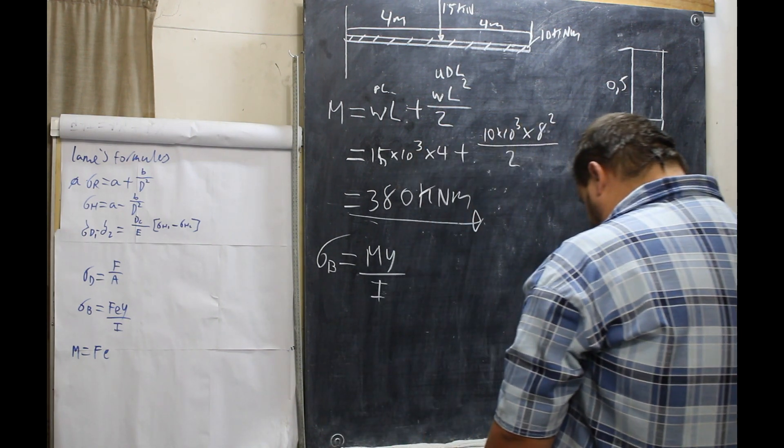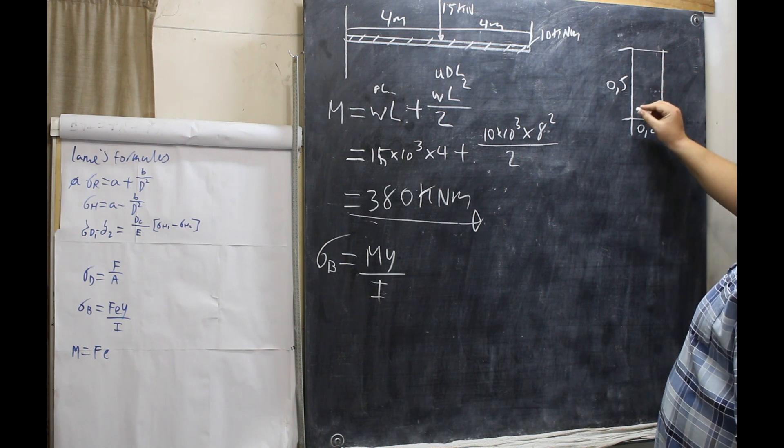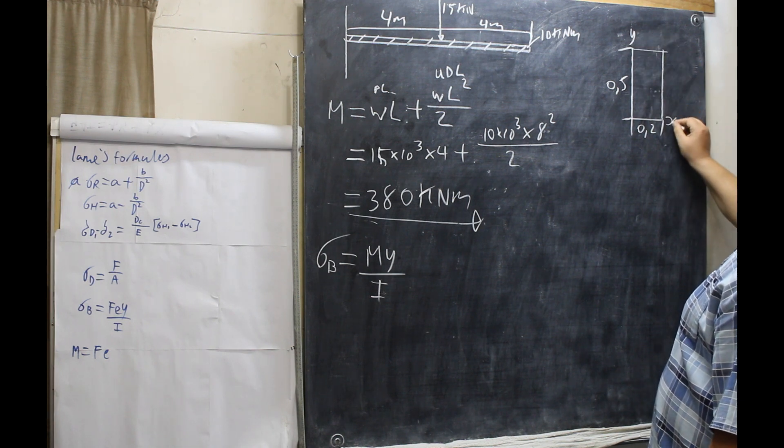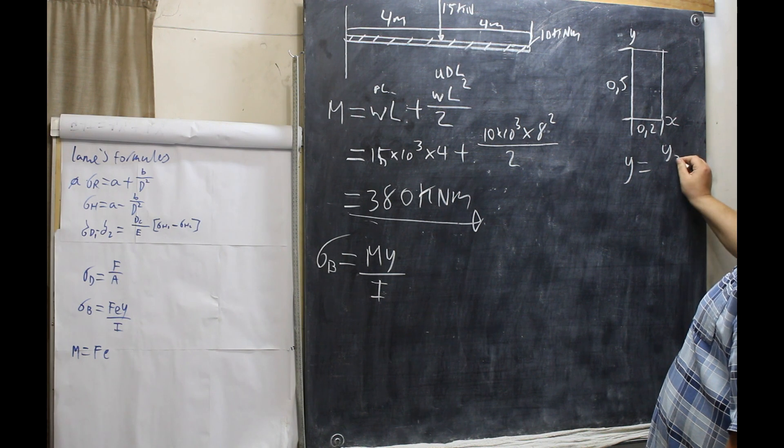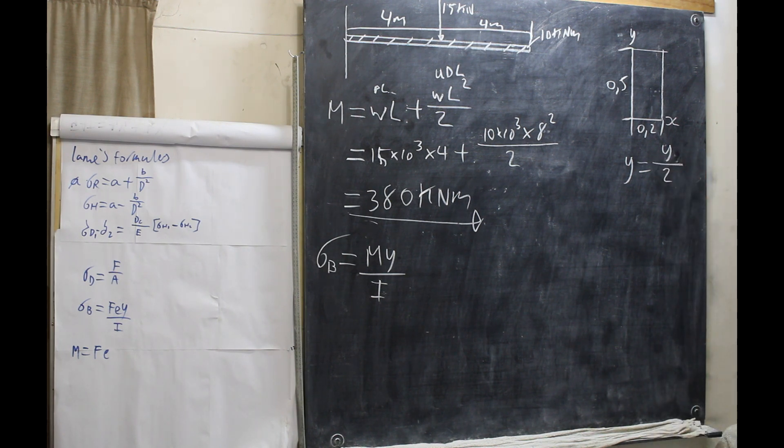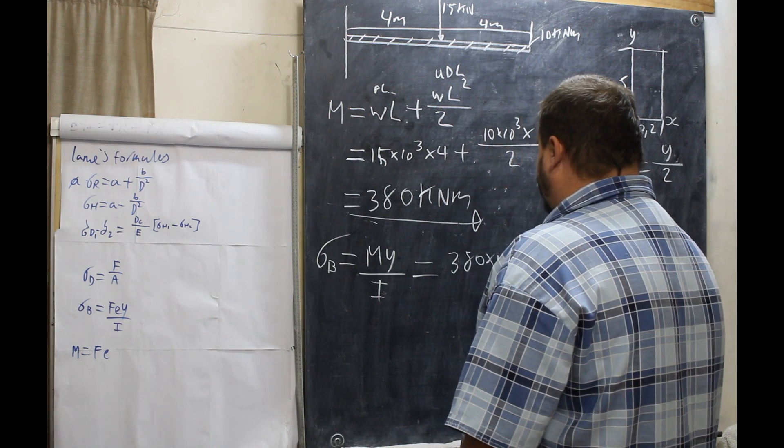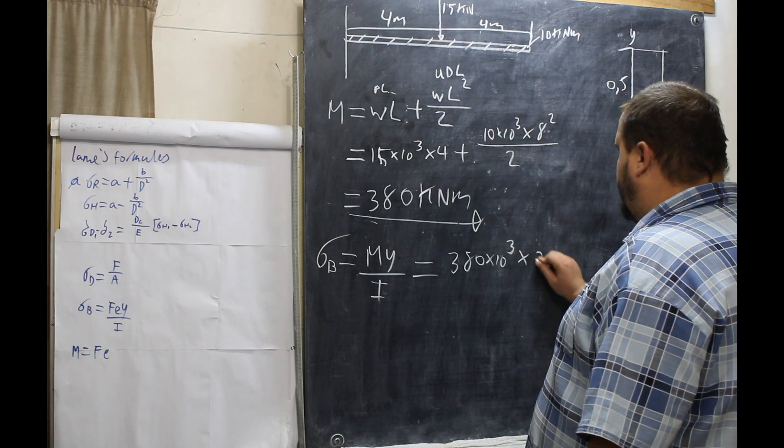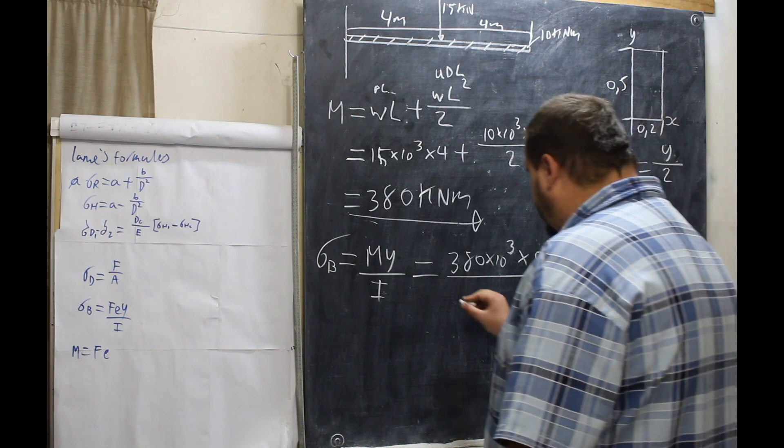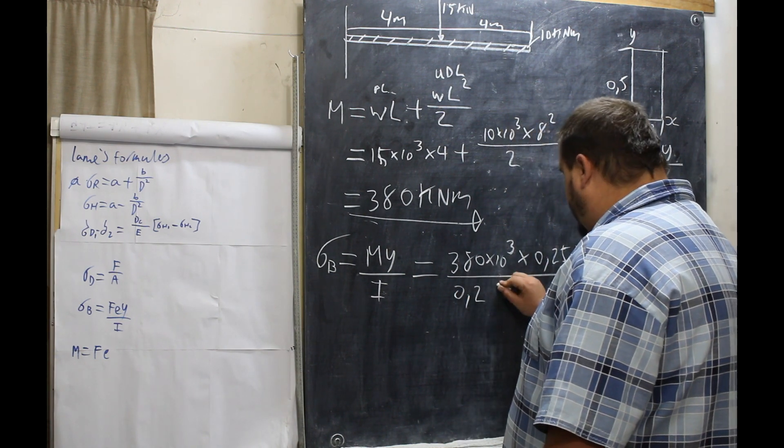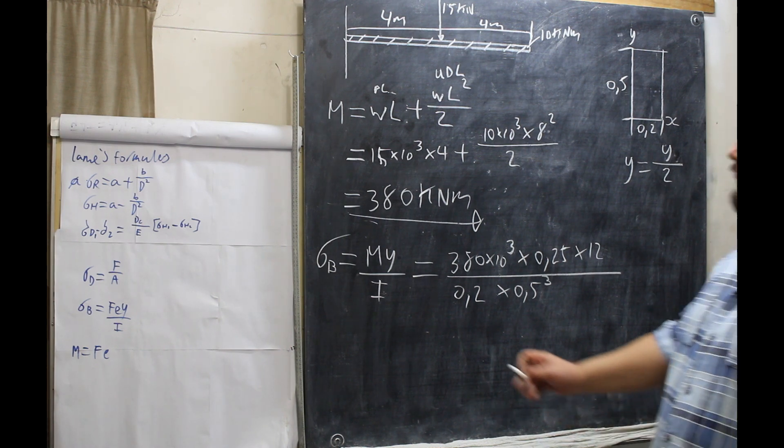So Y. Now Y is actually the Y axis. This is Y axis. This is Y and that's X. So our Y axis, Y in this case in the formula is equal to Y over 2, which is directly in half. So our formula will be 380 times 10 to the 3 times 0.25 times 12 all over 0.2 times 0.5 to the power 3. Now the 12 comes in because that is the formula for I.